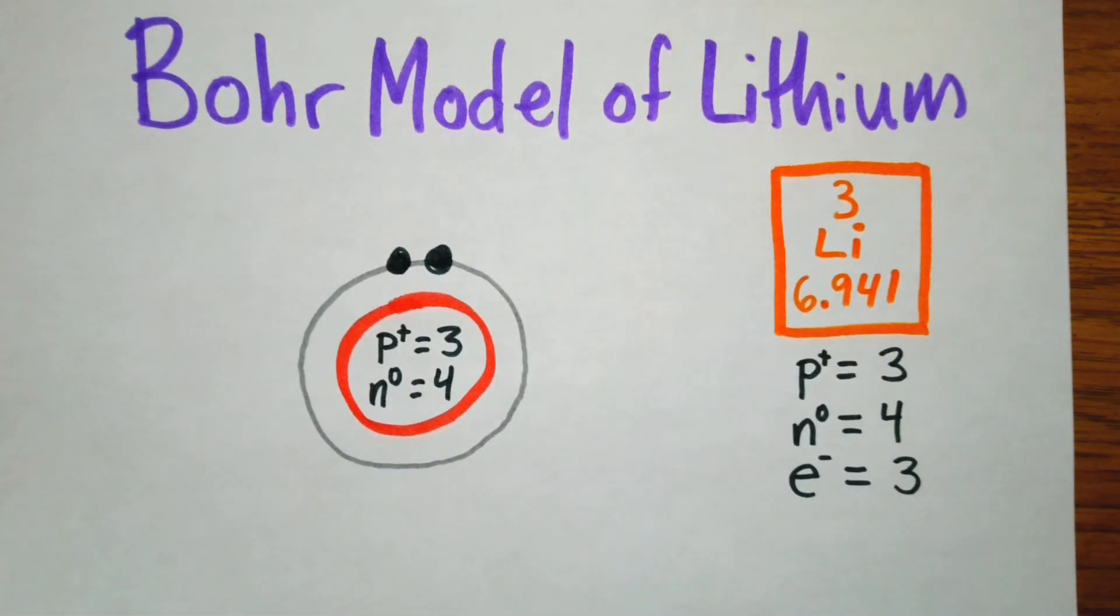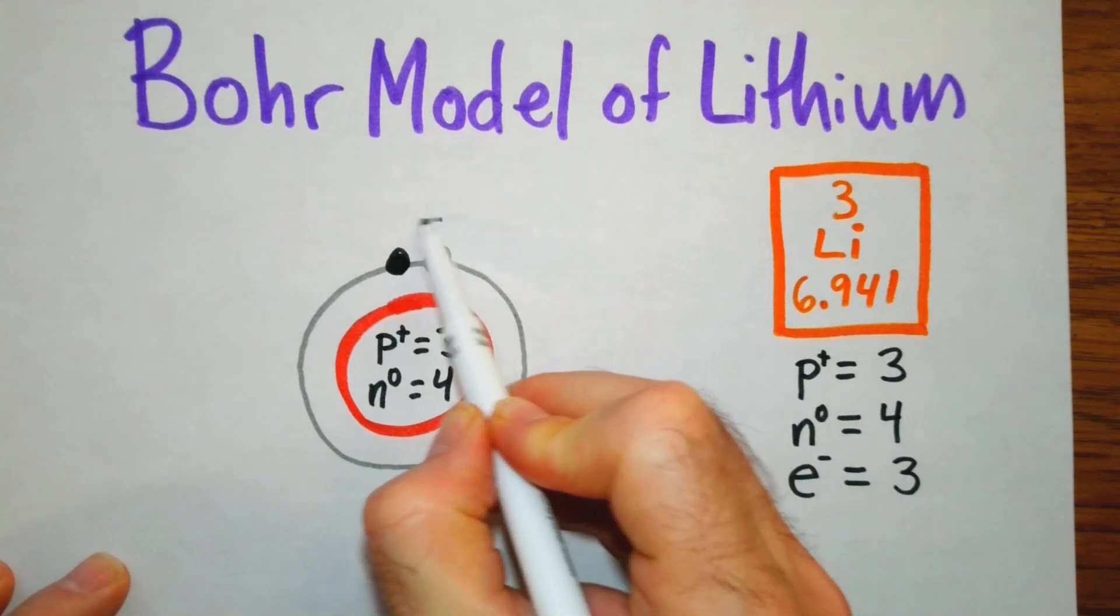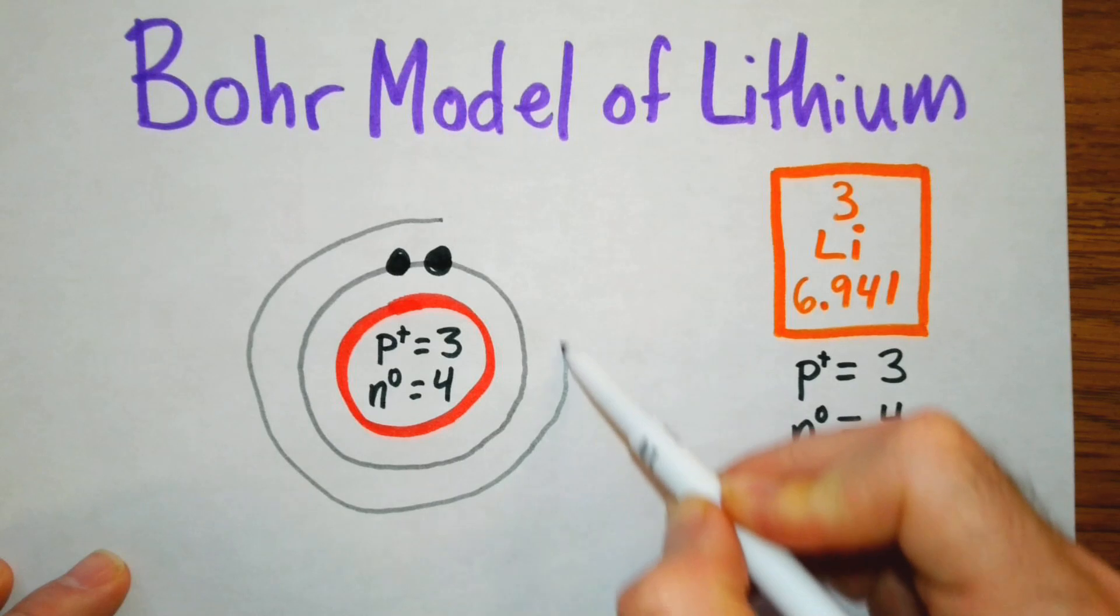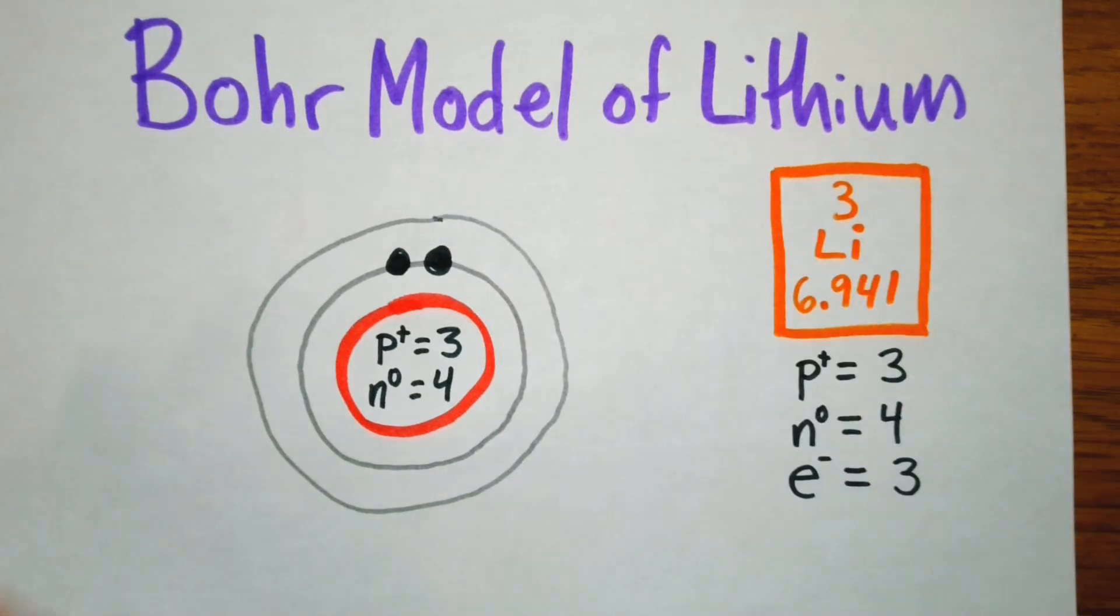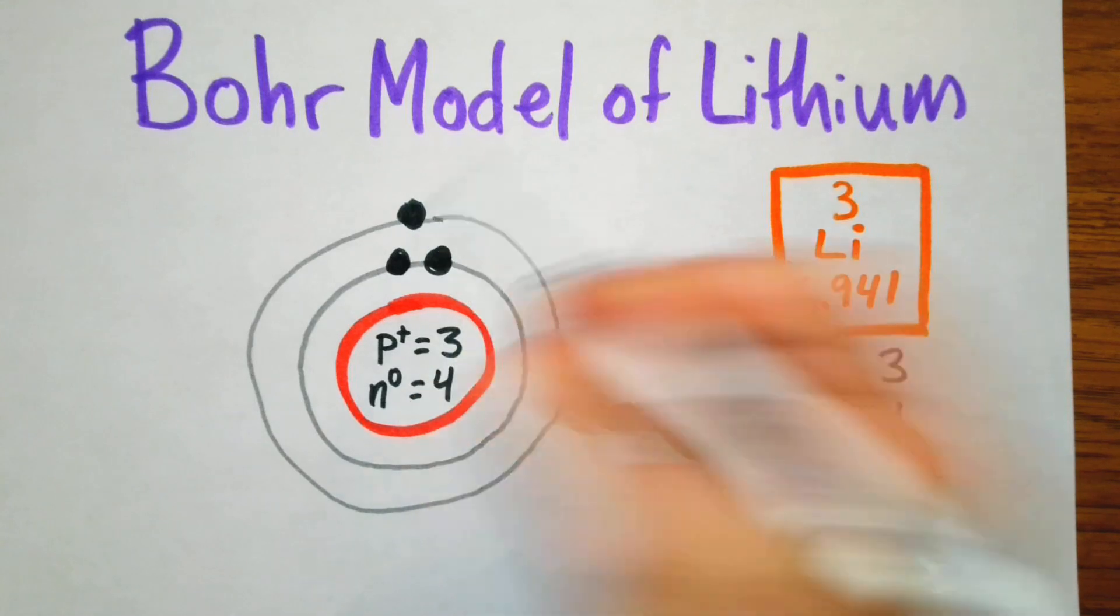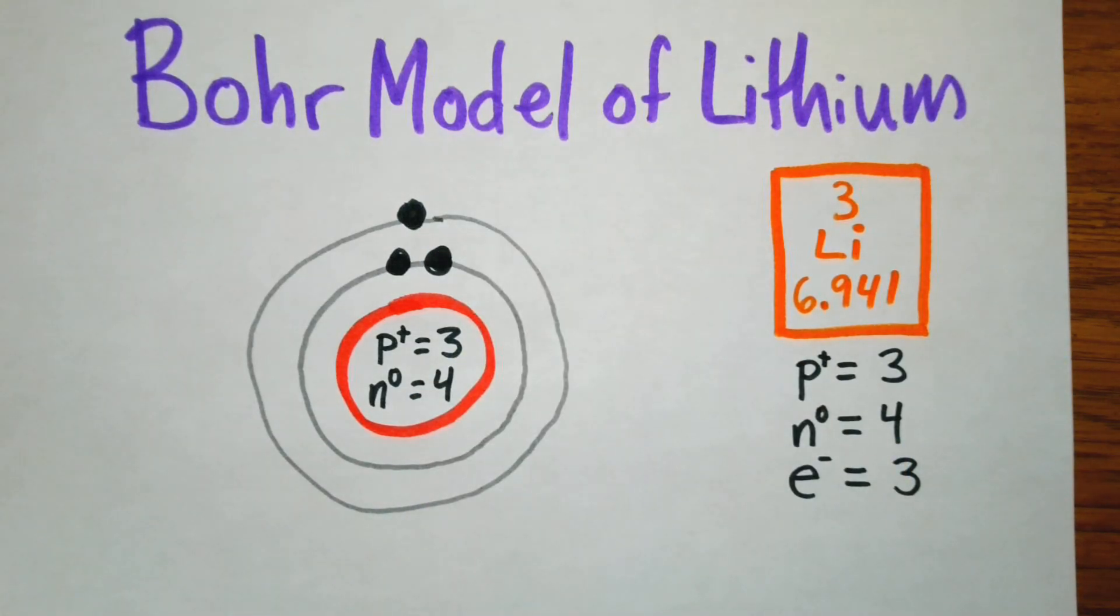Well, we still have one more electron we need to use, and so let's draw another orbital. This orbital, if you remember, holds a maximum of eight, but we don't have eight electrons to spend, so we just have one left. And so what we have here is the Bohr model of lithium.